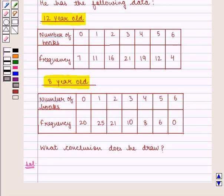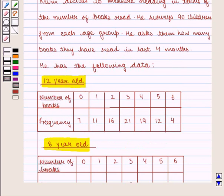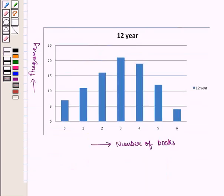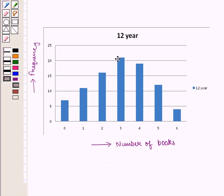Let us draw a bar diagram for both the series. First we shall draw a bar diagram for 12 year old children. Here is the required bar diagram for 12 year old children, in which we have taken the number of books on the x-axis and frequency on the y-axis. We can see that 7 children have read no book, 11 have read 1 book, 16 have read 2 books, 21 have read 3 books, 19 have read 4 books, 12 have read 5 books, and 4 have read 6 books in the last 4 months.